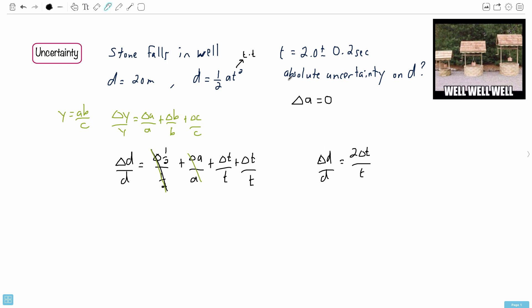We want the absolute uncertainty. What does that mean? That means we just want delta D by itself. So delta D equals - we put this D up top here - so it's 2 delta T over T times D. Let's put in all those numbers: 2 times the uncertainty on the time, which is 0.2, divided by the actual time, which is 2, all that times the distance, which is 20.